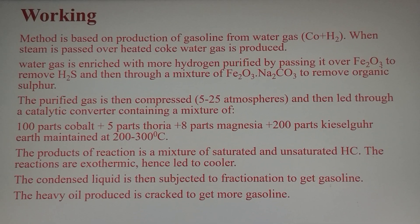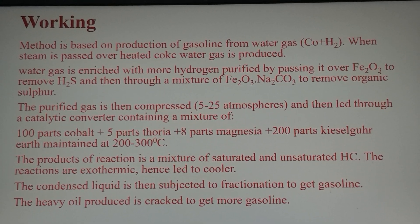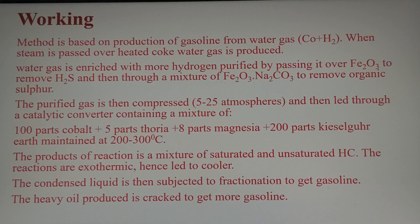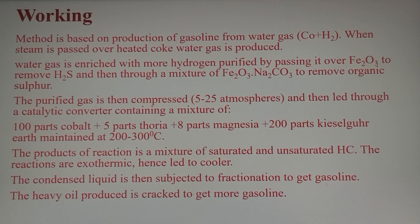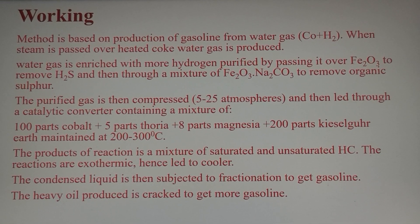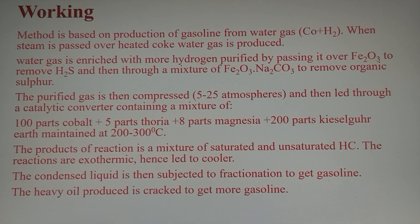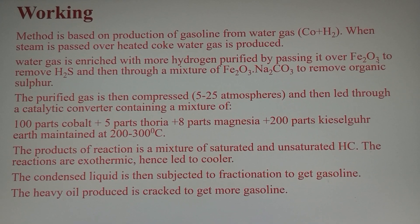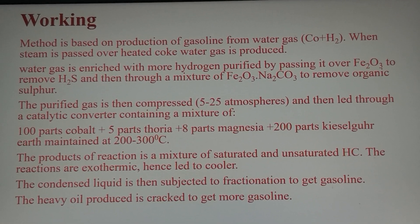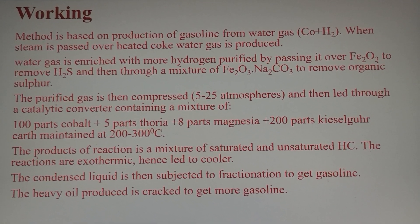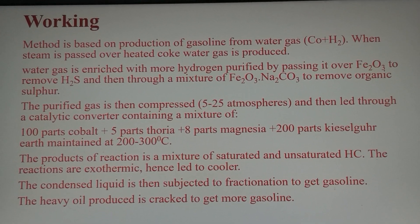The Fischer-Tropsch method of polymerization is based on the production of petrol from water gas. Water gas is obtained by passing steam over heated coke. This water gas contains impurities in the form of sulfur, which are removed by passing it over oxides of iron and a mixture of oxides of iron and sodium carbonate, which is then purified further and compressed.